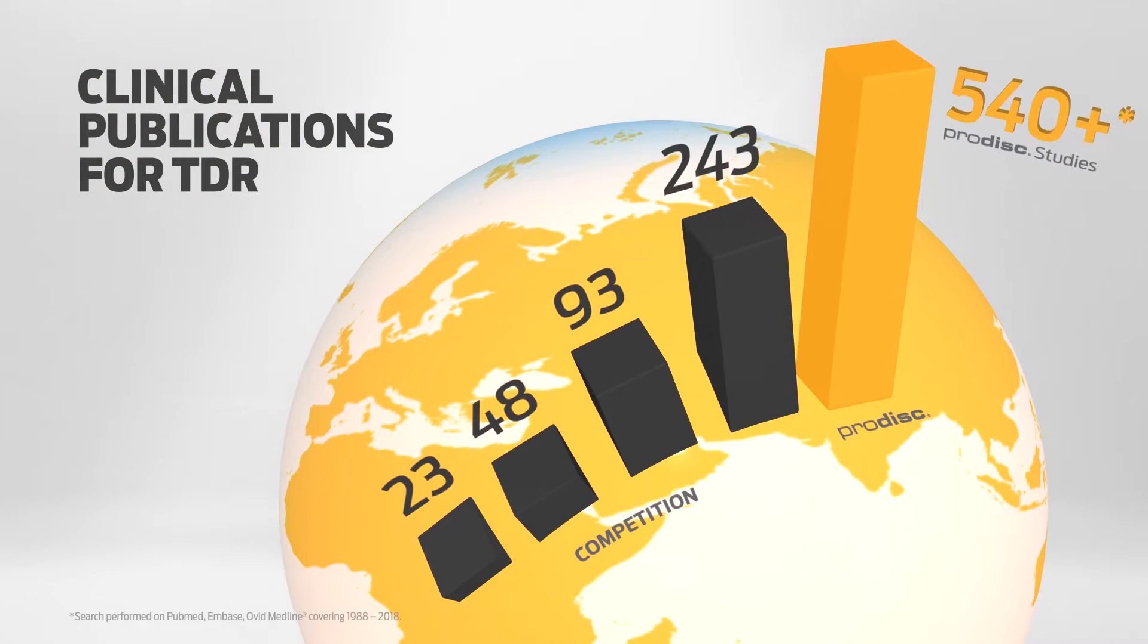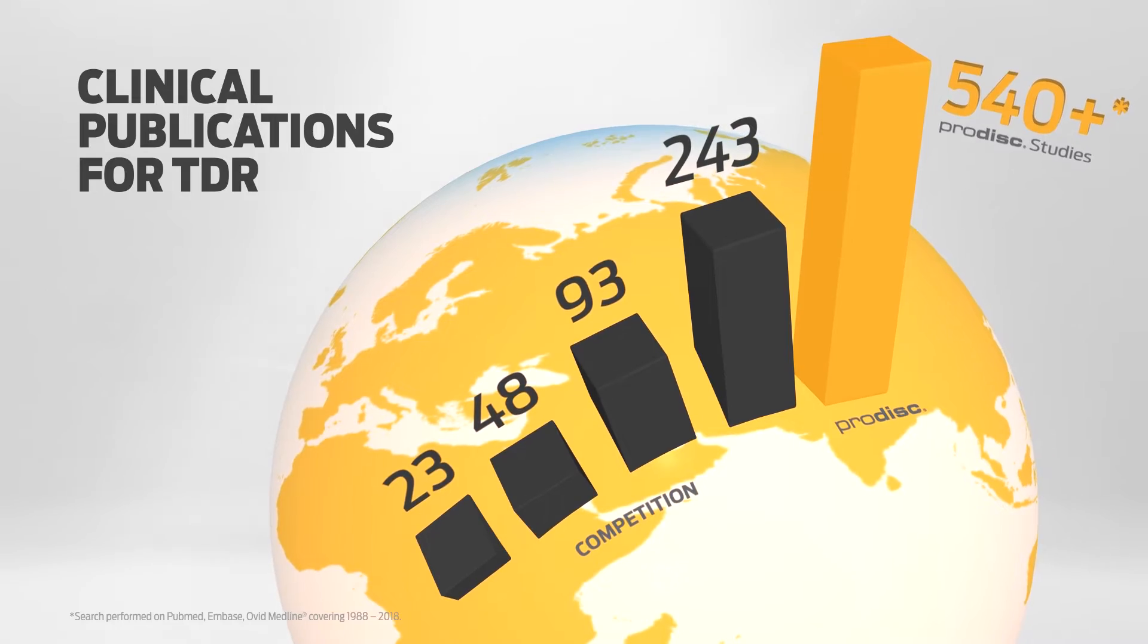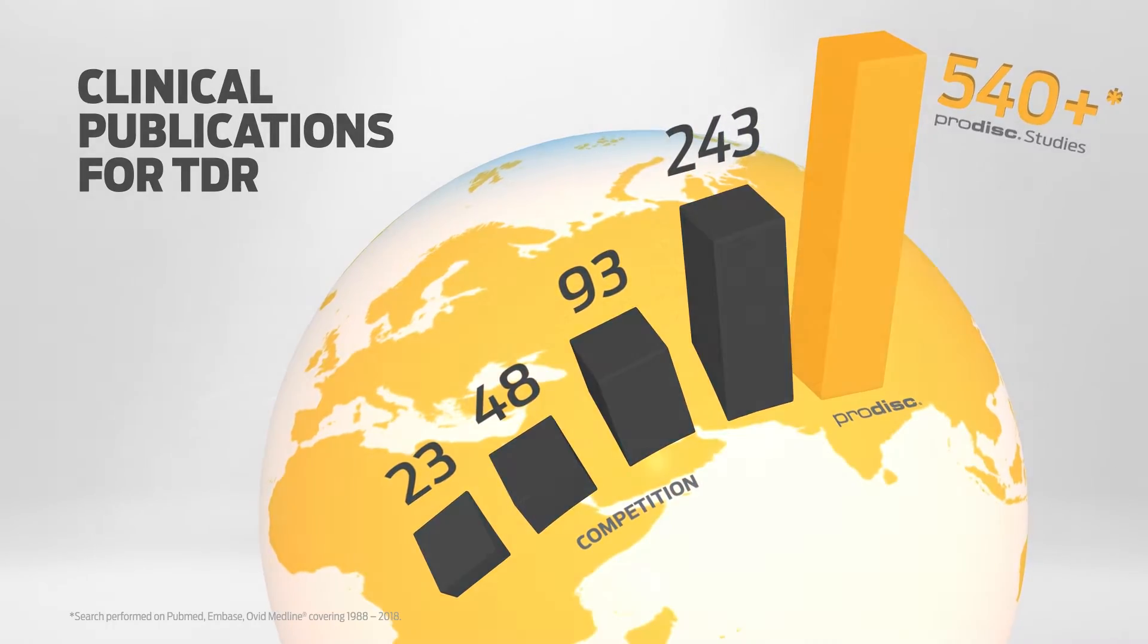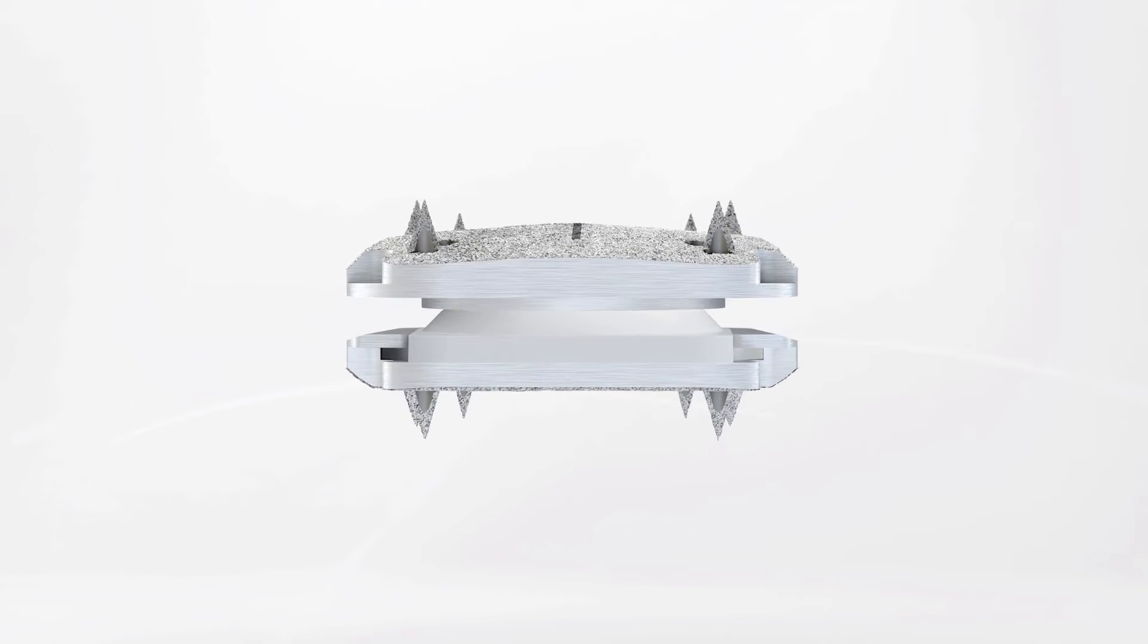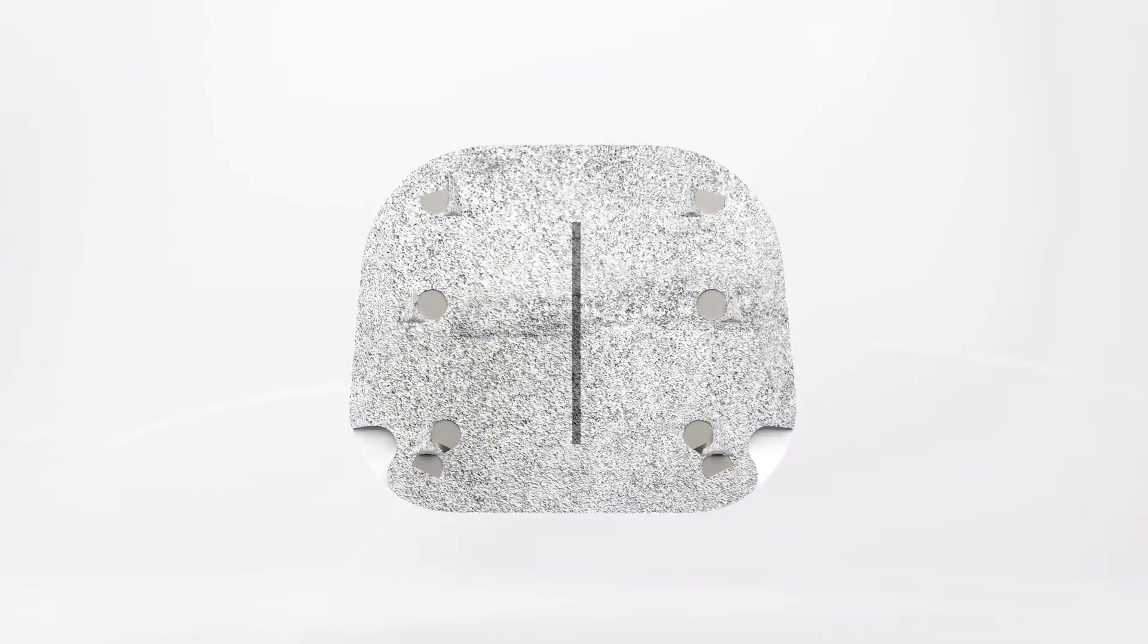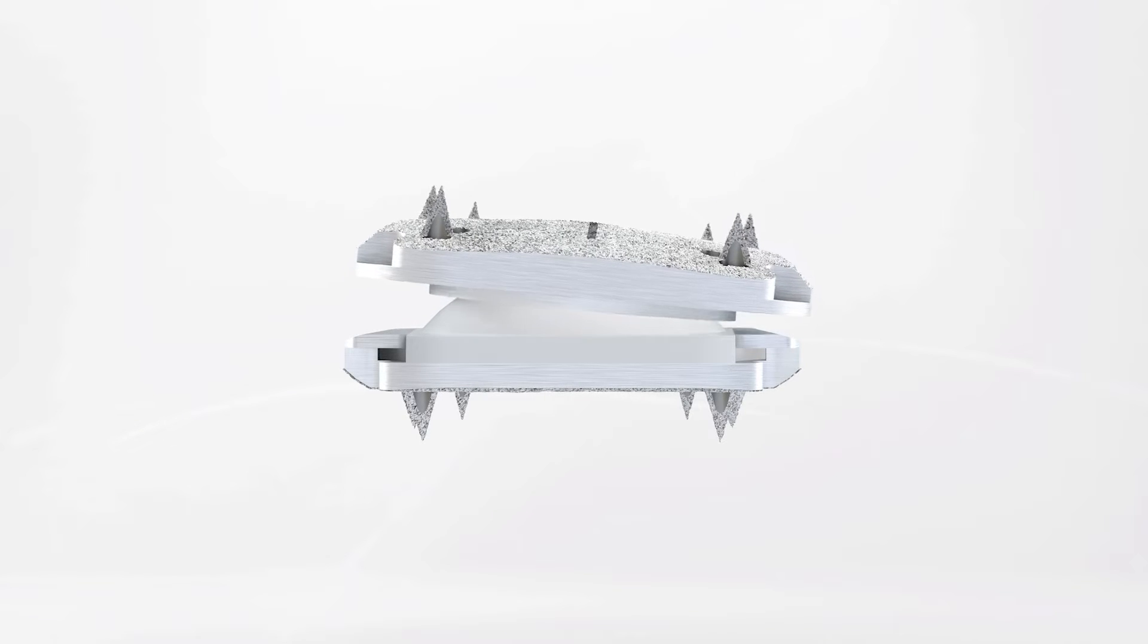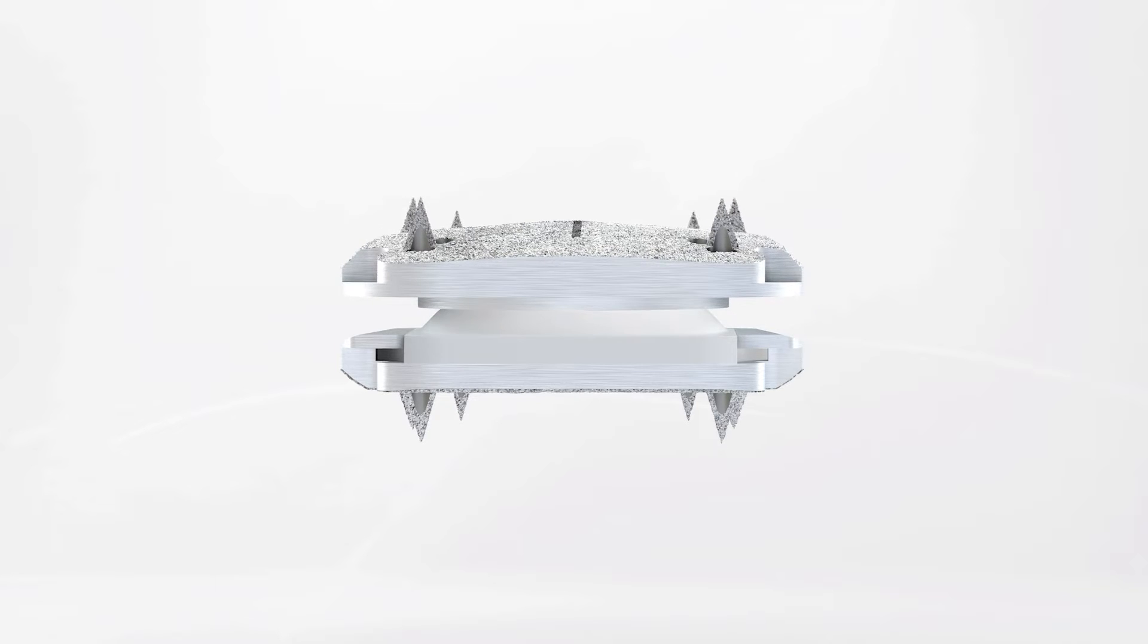The ProDisc C Vivo Total Disc Replacement is an FDA-approved spinal implant intended to reconstruct a diseased intervertebral disc in the cervical spine and is indicated for patients suffering from intractable symptomatic cervical disc disease, or SCDD, at one level between C3 and C7.